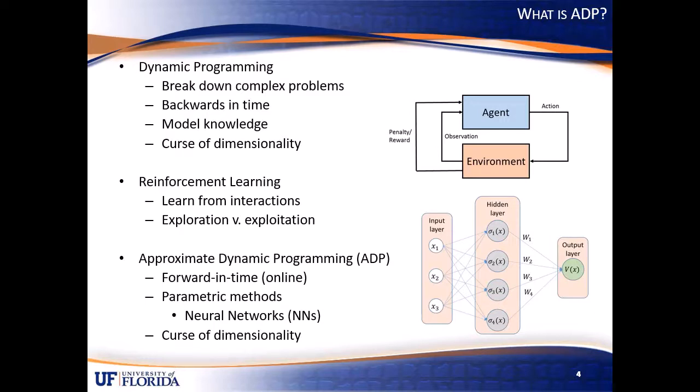ADP uses reinforcement learning to generate online solutions to optimal control problems using parametric methods such as neural networks. The curse of dimensionality problems that we see in other optimal control methods still exist, however. So if we increase the number of states in the system, then we would expect a large increase in the number of required neural network basis functions.